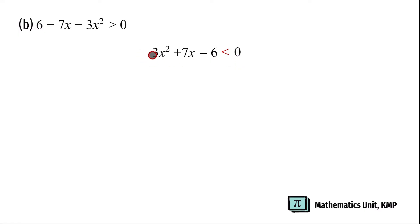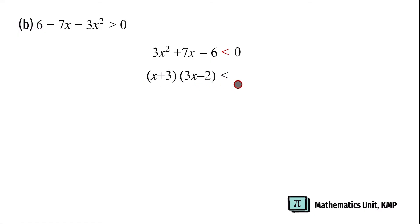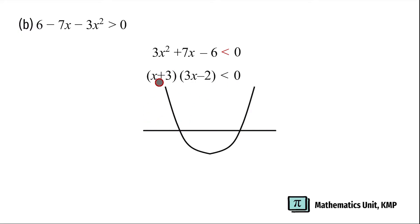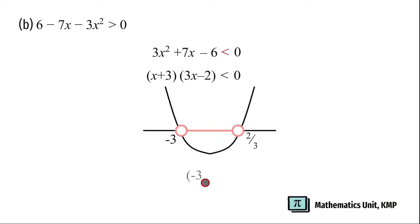Now our a is positive and all the variables are on the left-hand side, and 0 is on the right-hand side. Let us factorize: we get (x + 3)(3x - 2) < 0. Let's draw a smile graph. For x + 3, the x-intercept is -3. And for 3x - 2, the x-intercept is 2/3. Since our y is less than 0, the solution is going to be in the middle, and we write the solution as the open interval (-3, 2/3).